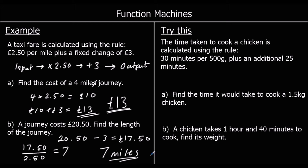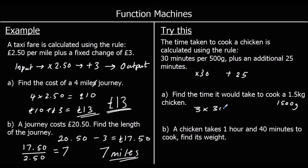A question for you to try. The time taken to cook a chicken is calculated using the rule: 30 minutes per 500 grams plus 25 minutes. So we take how many lots of 500 grams we've got, times it by 30, and then plus 25 minutes. Find the time it would take to cook a 1.5 kilogram chicken. 1.5 kilograms is 1,500 grams — that's 3 lots of 500 grams. So 3 times 30 is 90, plus an additional 25 minutes gives 115 minutes.